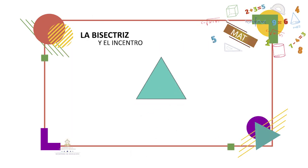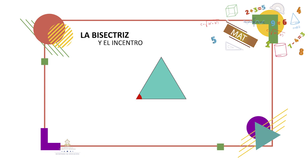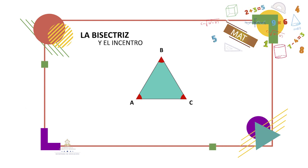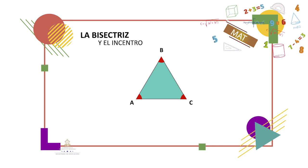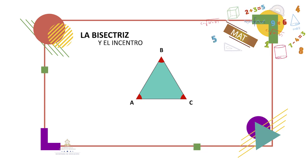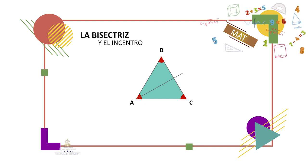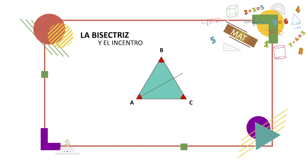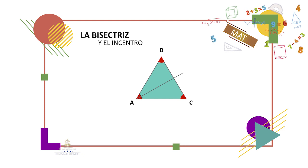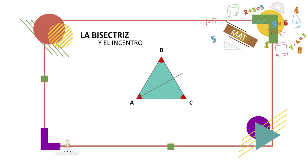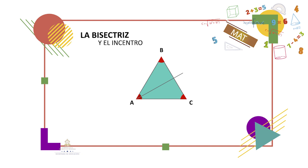En un triángulo tenemos tres ángulos internos, los llamaremos por sus vértices ángulo A, ángulo B y ángulo C. La bisectriz es la recta que divide cada ángulo en dos ángulos congruentes o con las mismas medidas. Por ejemplo, dividimos el ángulo A en dos partes iguales por una recta y colocamos una marca a cada lado del ángulo para indicar que tiene la misma medida. La recta que se acaba de trazar es la bisectriz.